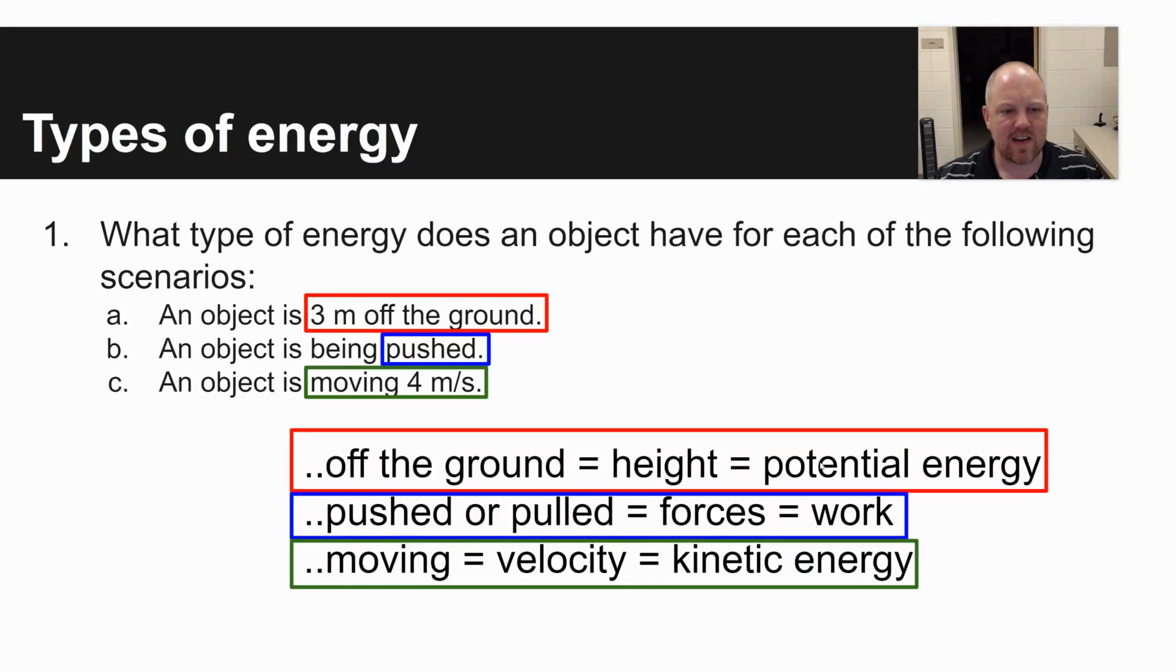A second question, is an object being pushed? If something is pushed or pulled, if there's a force or you see newtons, there is work involved. Then option three, is an object moving four meters per second? What type of energy does it have? If it's moving, that means it has velocity, and so there's kinetic energy. So those are the three questions I would ask myself. Is it off the ground? Is there a push or a pull? Is there movement to help you determine what type or types of energy you have?